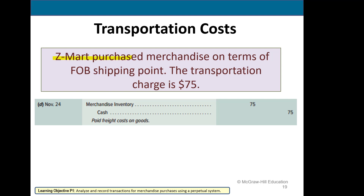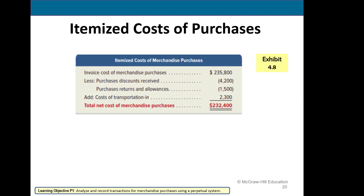Now for transportation costs: Z-Mart purchased merchandise with terms of FOB shipping point, which means Z-Mart has to pay transportation costs. We increase merchandise inventory for the transportation cost and credit cash. This shows the itemized cost of the merchandise: the full purchase price, less discounts, less returns and allowances, and then adding our transportation cost.